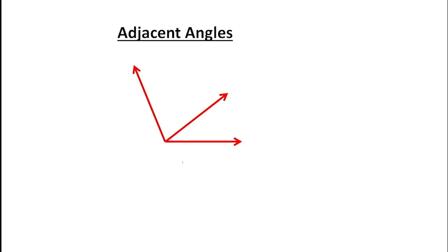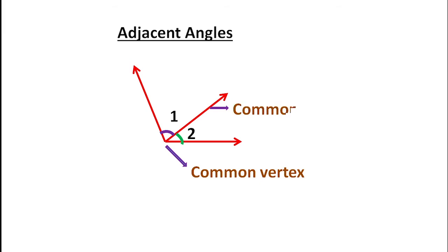Next, adjacent angles. Adjacent angles are two angles having a common arm and a common vertex. Here, angles 1 and 2 have a common vertex and a common arm, and the two non-common arms are lying on opposite sides of the common arm.